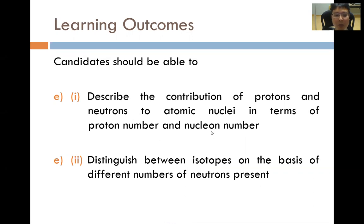E part 2 is a definition learning outcome whereby candidates should be able to define isotopes and to distinguish between isotopes on the basis of different numbers of neutrons present.